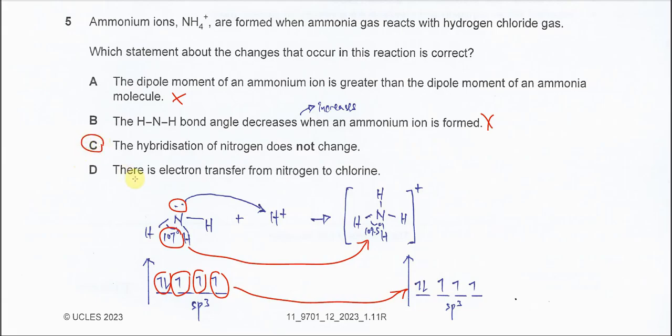So why D is not the answer? There is electron transfer from nitrogen to chlorine. Nope. The dative bond forms between the nitrogen and the hydrogen ion. Therefore answer is C.